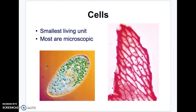Cells are the smallest unit of life. Most are microscopic — you typically can't see them with your naked eye. That's what microscopic means. It's the smallest thing that's considered alive.